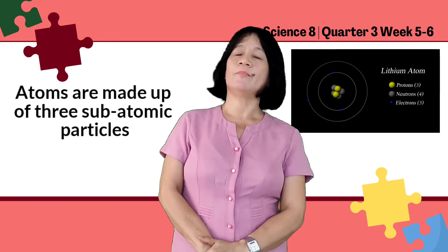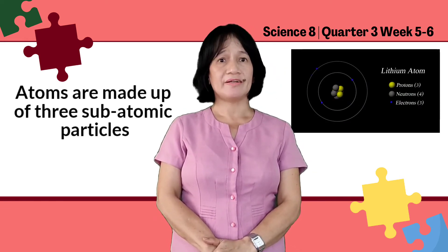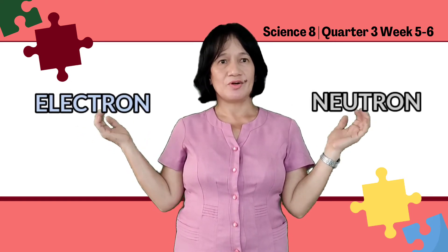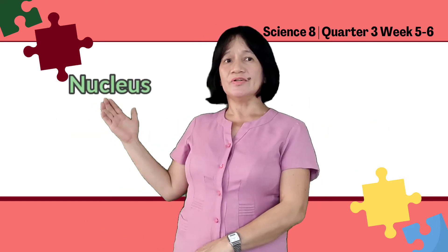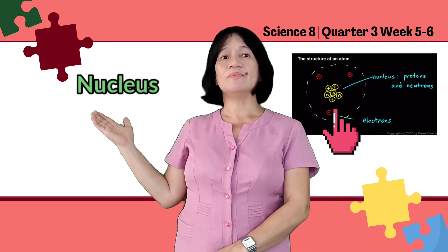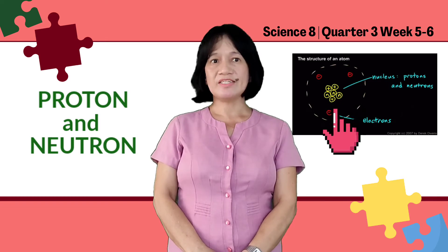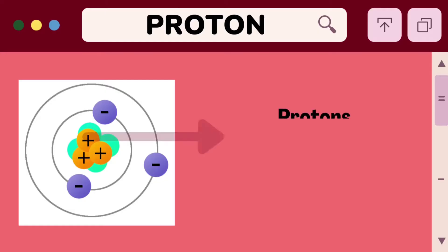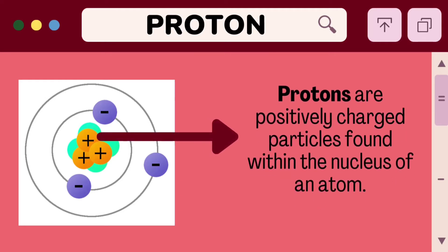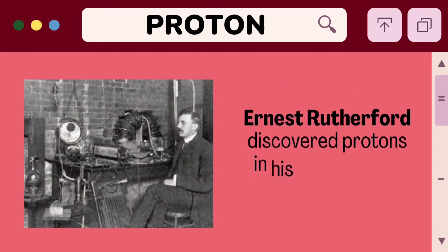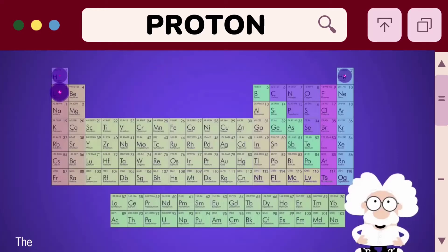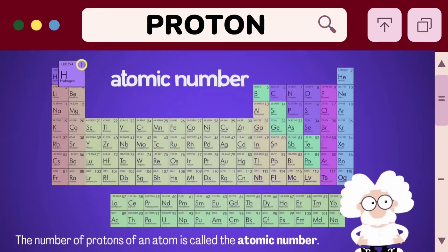Atoms are made up of three subatomic particles: proton, neutron, and electron. The center of an atom is composed of protons and neutrons. It was discovered by Ernest Rutherford in 1911. Protons are positively charged particles found in the nucleus of an atom. Ernest Rutherford discovered protons in his cathode ray tubes experiment. The number of protons of an atom is called the atomic number.